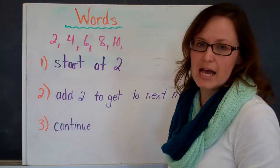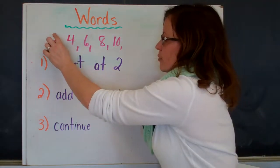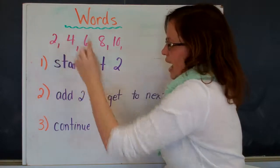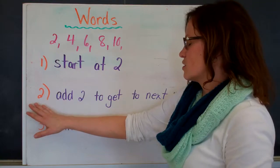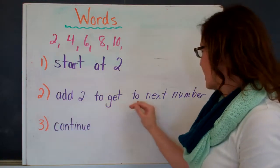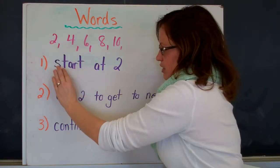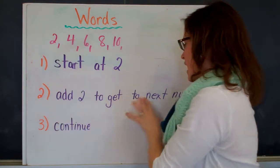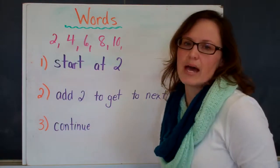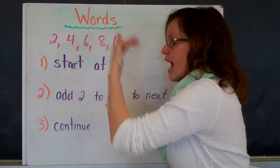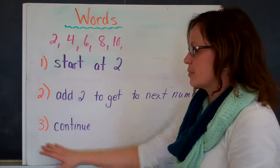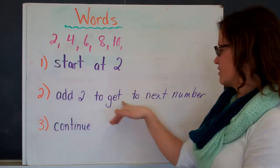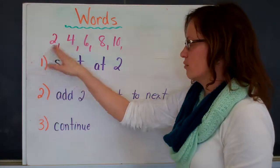The next step is to tell how do you get from term 1 to term 2, and we know that we add 2. So the second step is: add 2 to get to the next number. That's how we get from the first number — start at 2 — to the next number. And for this number pattern, it's pretty simple: we add 2 every time. So the third step is to just continue — start at 2, add 2 to get to the next number, and then continue.